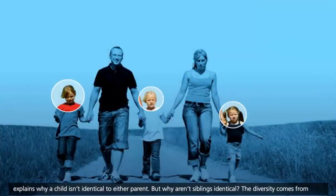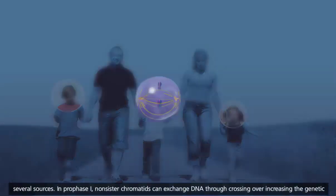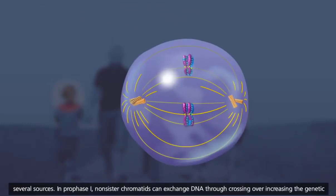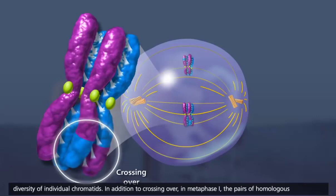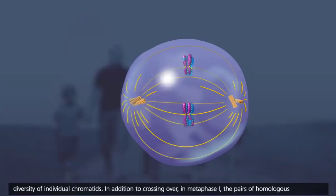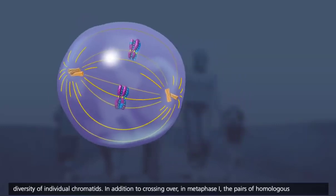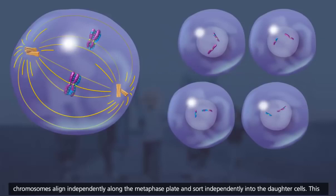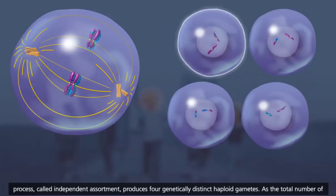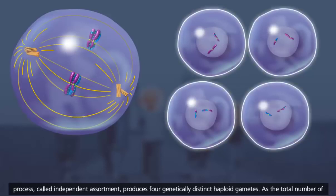But why aren't siblings identical? The diversity comes from several sources. In prophase I, non-sister chromatids can exchange DNA through crossing over, increasing the genetic diversity of individual chromatids. In addition to crossing over, in metaphase I, the pairs of homologous chromosomes align independently along the metaphase plate and sort independently into the daughter cells. This process, called independent assortment, produces four genetically distinct haploid gametes.